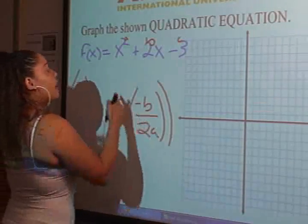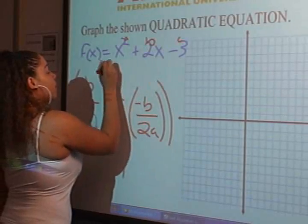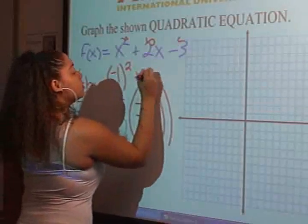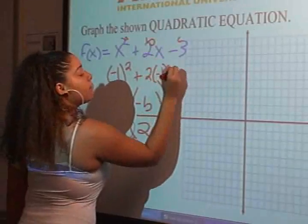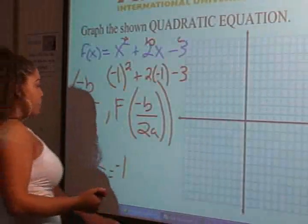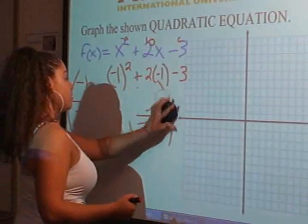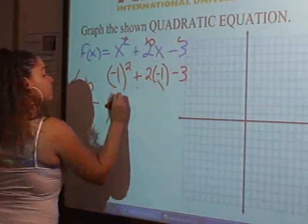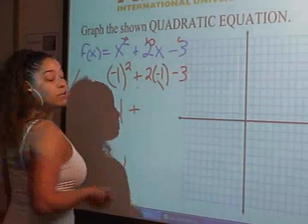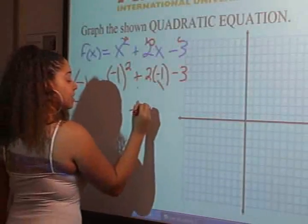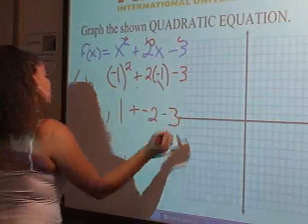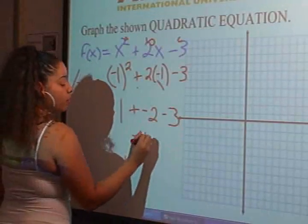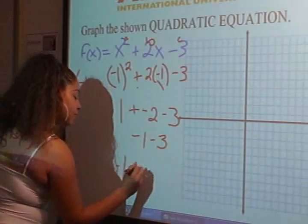And we can just go right up here and plug in negative 1 wherever you see x. So it would be negative 1 squared plus 2 times negative 1 minus 3. Okay, negative 1 squared gives you positive 1. 2 times negative 1 gives you a negative 2 and then minus 3. 1 plus negative 2 gives you negative 1. Negative 1 minus 3 gives you a negative 4.